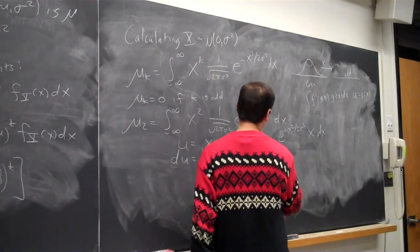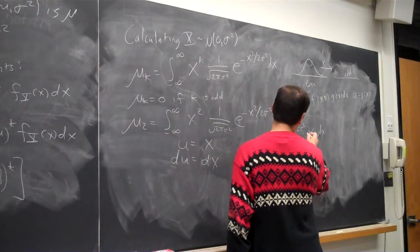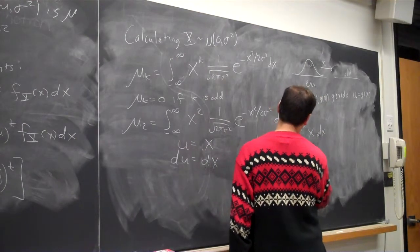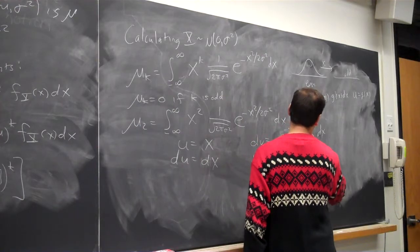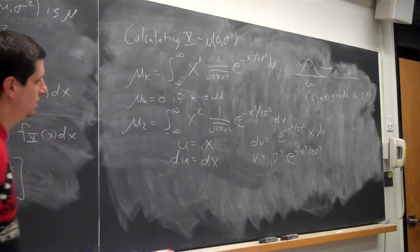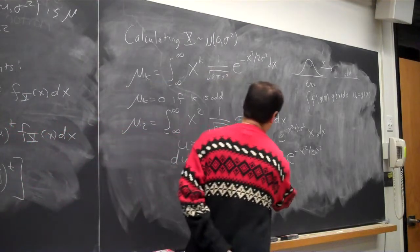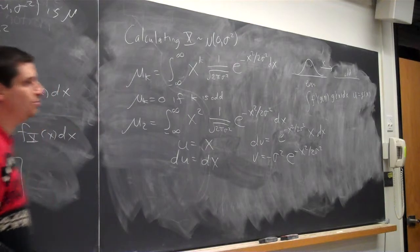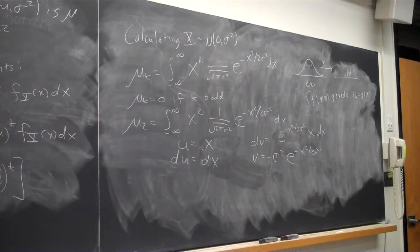And then we'll get v is equal to, I think I needed one over sigma squared. Then I get sigma squared e to the negative x squared over two sigma squared. And it'll be negative, yes. Okay. So this is how you would do the problem using integration by parts.